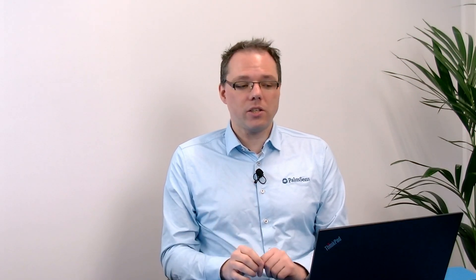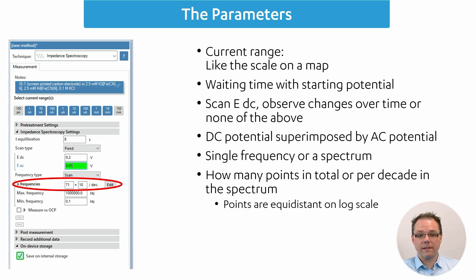Because usually impedance spectroscopy results are plotted on logarithmic scales, the frequencies that are chosen for you are equidistant on a logarithmic scale. If you want to know which values are used and maybe even change them, you can use the edit button to make it an individual list of frequencies.